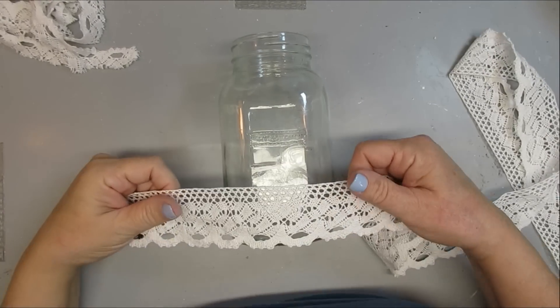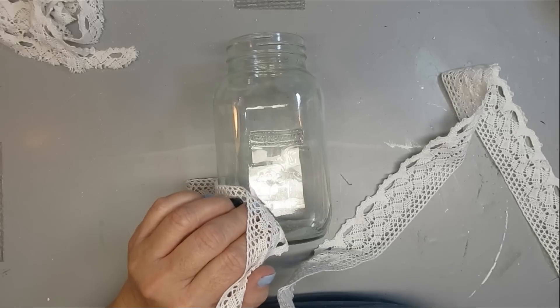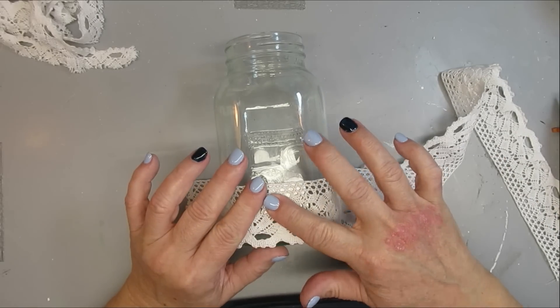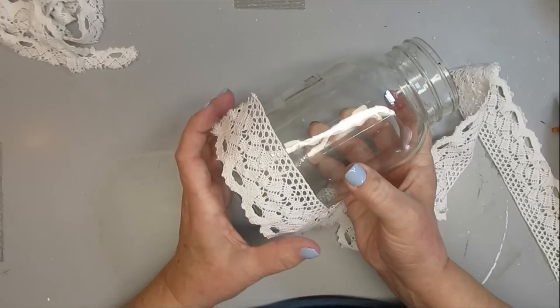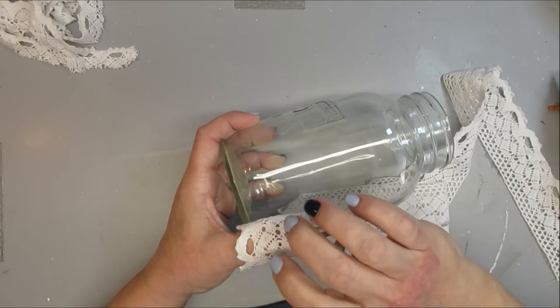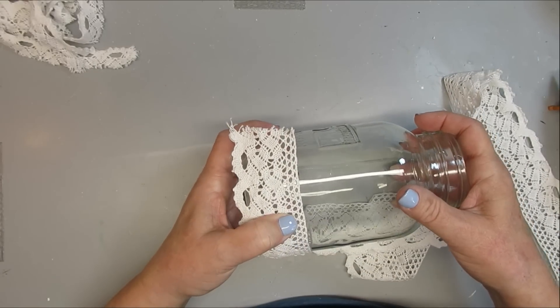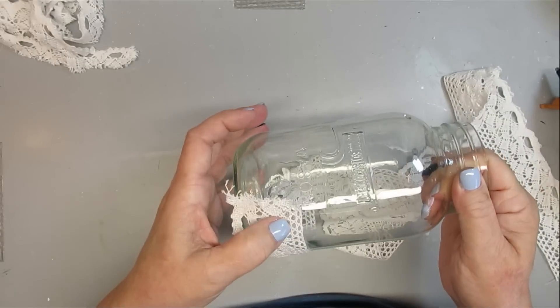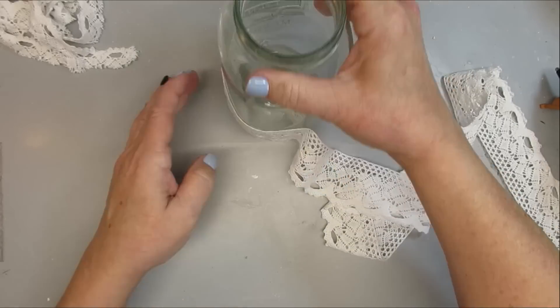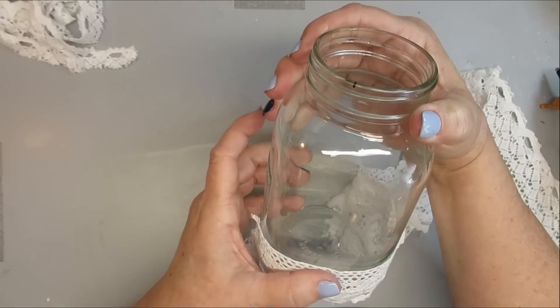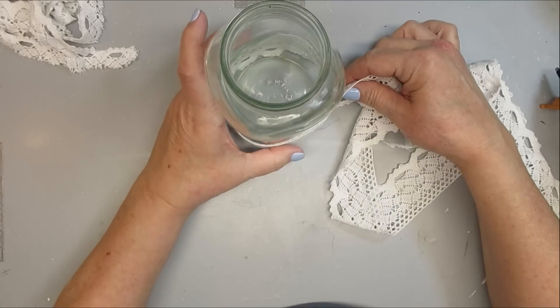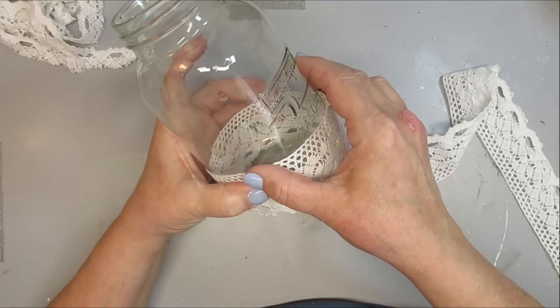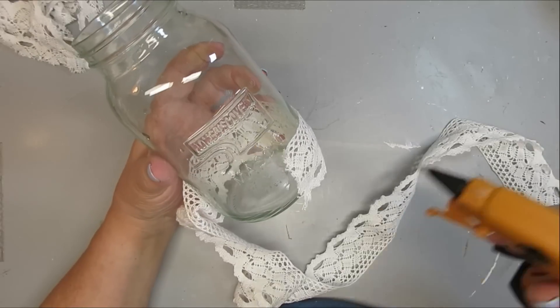For my projects today - because this is shabby chic meet farmhouse - I wanted to use some classic farmhouse decor pieces. A mason jar is definitely something that you see in farmhouse decor a lot, but I want to make this one shabby chic. So I'm taking this wide lace ribbon and I'm going to glue it around the bottom of the jar, and then I'm going to add another layer on the top of the jar. And that's just going to create a really beautiful ambiance for what I'm going to be doing with this later.